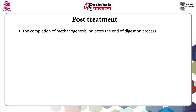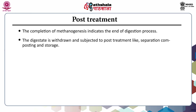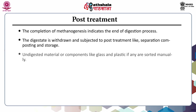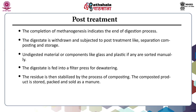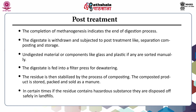On completion of the methanogenic phase, the digestion process ends. The digestate withdrawn is subjected to post-treatment: separation, composting, and storage. Undigested materials like glass and plastic are sorted out manually. The digestate is then fed into a filter press for dewatering to remove water from the solid material. The residue is then stabilized by composting. The composted product is stored, packed, and sold as manure. If the residue contains hazardous substances, it is disposed of safely in landfills.